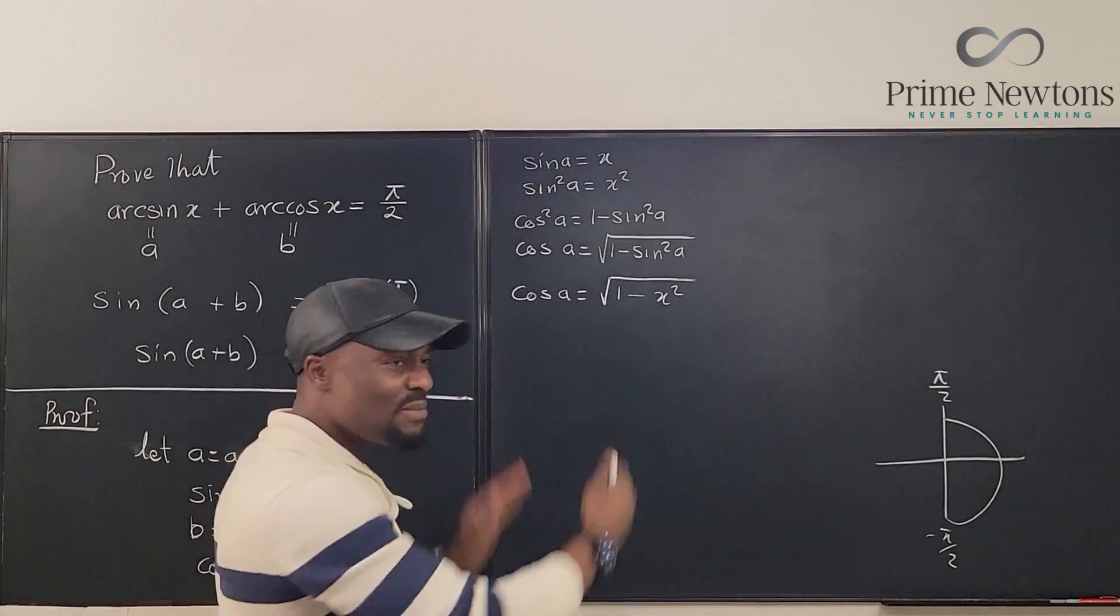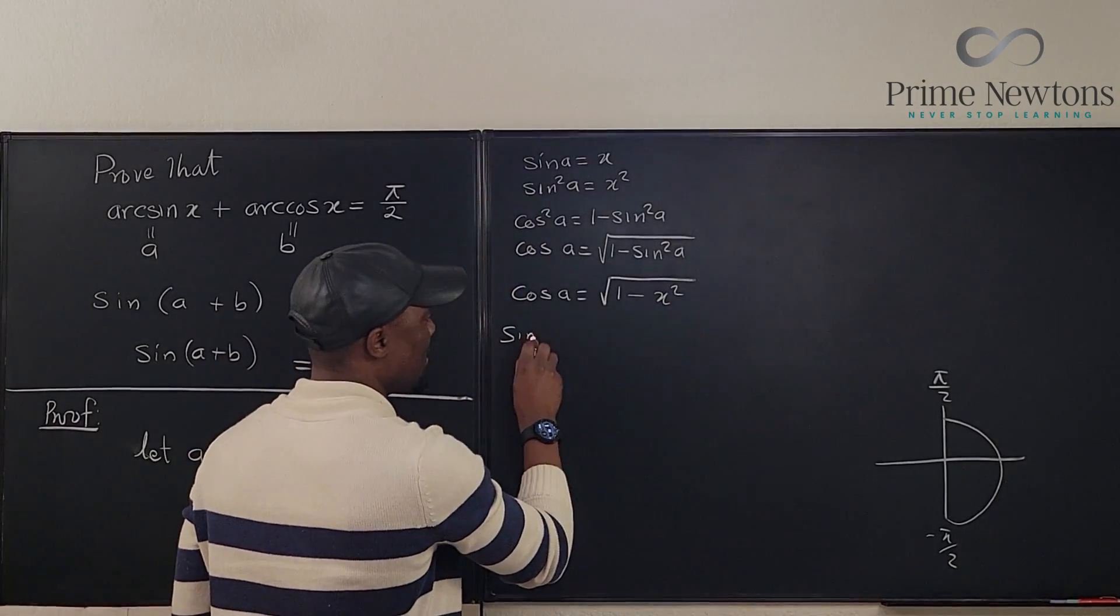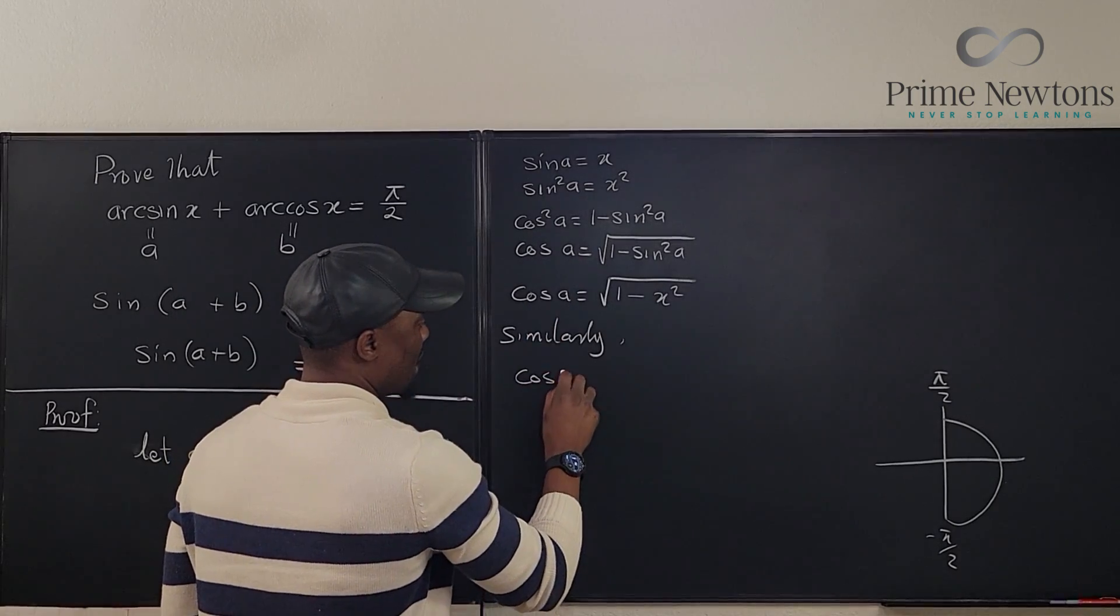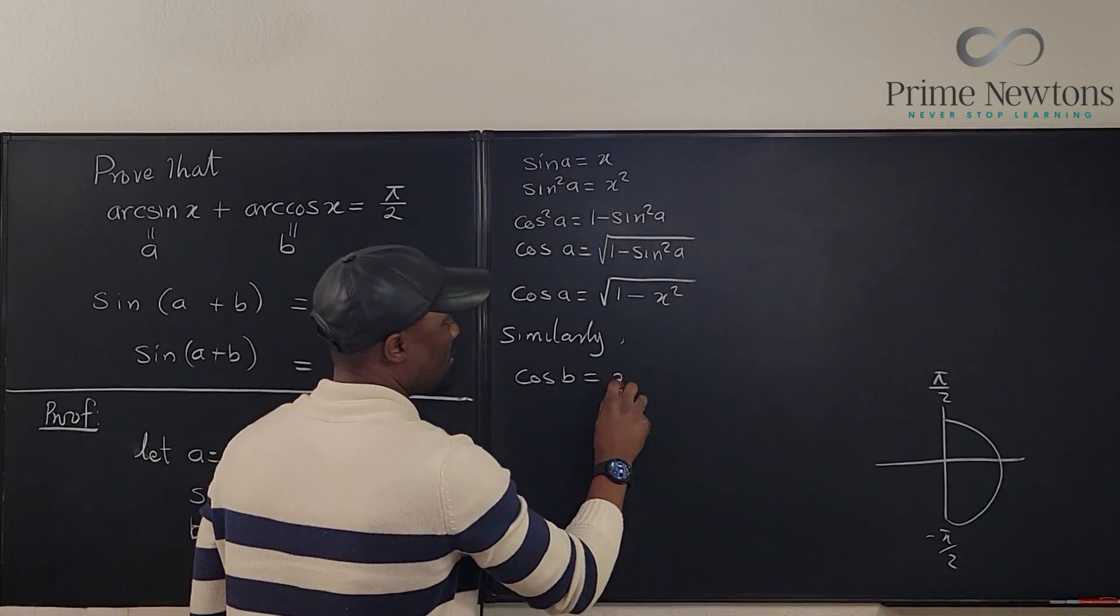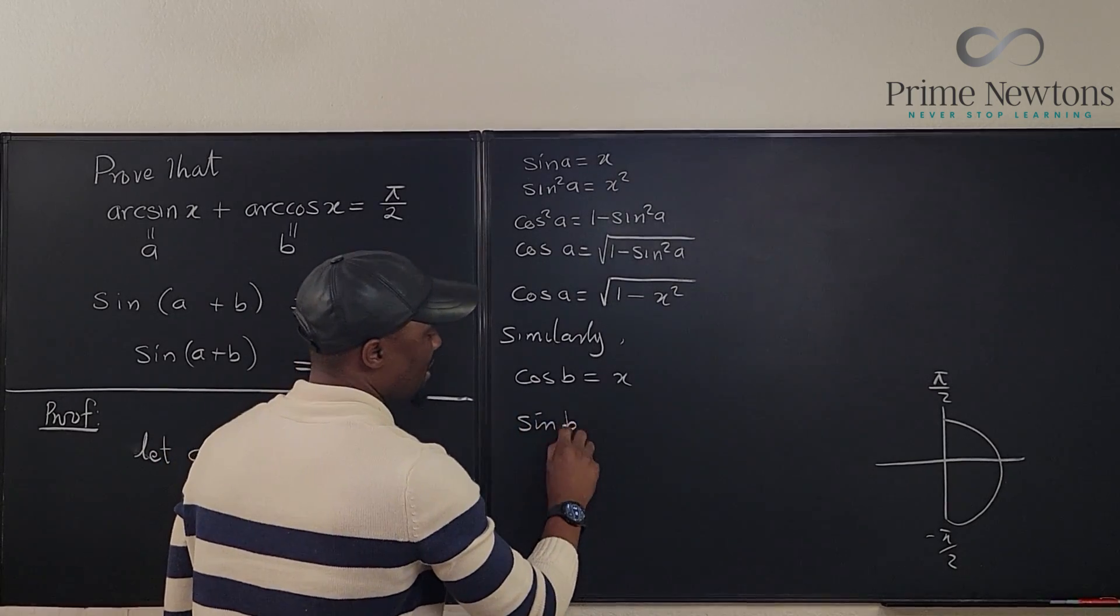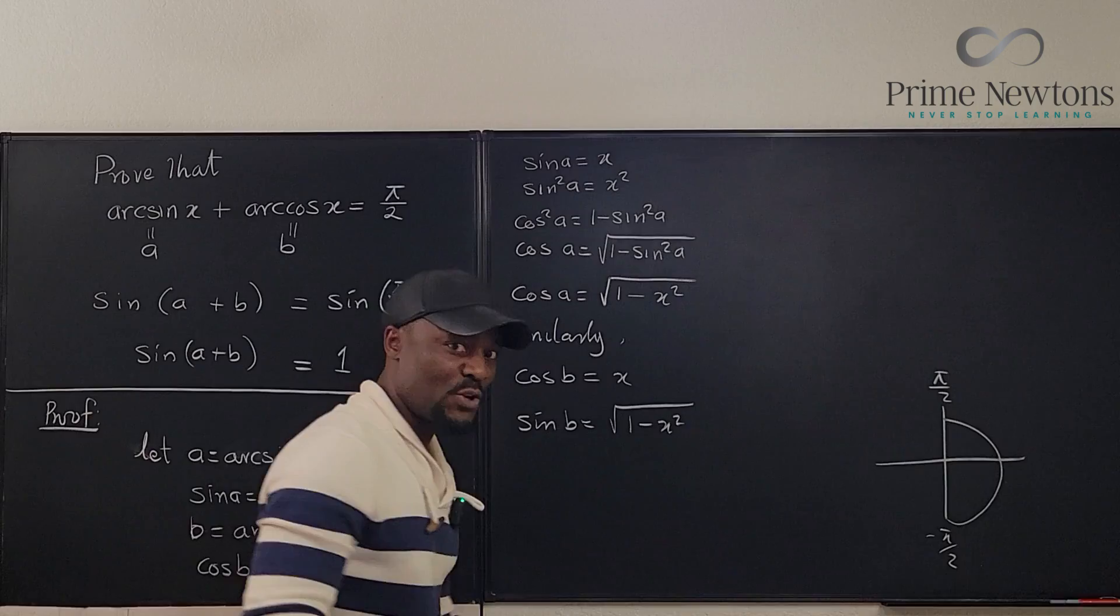If we do the same thing starting from cosine, we can say similarly if cosine b is equal to x, we can establish that sine b is equal to the square root of 1 minus x squared. Now let's go back again.